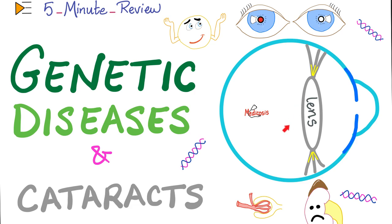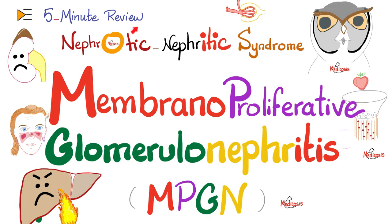How can I find this on physical exam? By doing the red reflex. Normally it should be red and central like this. But if you found that the red reflex is no longer red — instead it is white — this could be a sign of cataract.